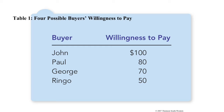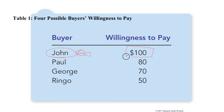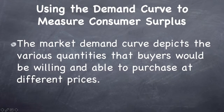Imagine we have a rare Beatles album and four buyers: John, Paul, George, and Ringo. If only one album is for sale, it would go to John because he's willing to pay the most. In an auction situation, after $80 George, Paul, and Ringo would all drop out, and the album would go to John at around $80.